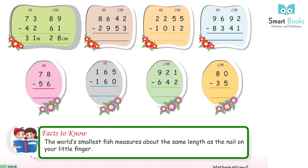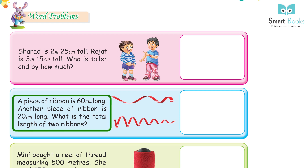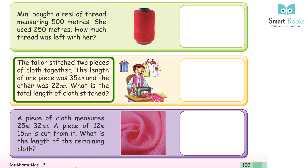Facts to know: The world's smallest fish measures about the same length as the nail on your little finger. Word problem: Sharat is 2 m 25 cm tall. Rajat is 3 m 15 cm tall. Who is taller and by how much? Answer: 90 cm. A piece of ribbon is 60 cm long; another piece is 20 cm long. What is the total length? Answer: 80 cm. Mini bought a reel of thread measuring 500 meters and used 250 meters. How much thread was left? Answer: 250 meters.